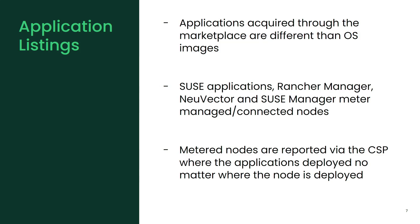Some more about the application listings. Rancher, Manager, and NuVector are container listings coming through the container marketplaces, so the user experience is different. In AWS, for example, if you get a marketplace listing for a container product, you will be presented with a Helm command — Helm install, and so on. That is the common way to interact with your cluster, and that's what AWS implemented.